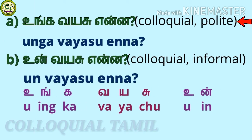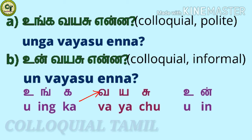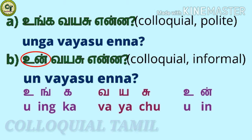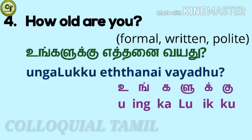The colloquial polite form is 'unggal vayadu enna'. You have learned 'unggal' in the self introduction Tamil part 1 video. For 'vayadu': V, a short sound letter, a short sound letter, 'to' — while speaking 'to' may also sound as 'su' in some words — together: vayadu. The informal form is 'un vayadu enna'. You have also learned 'un' in the self introduction Tamil part 1 video.